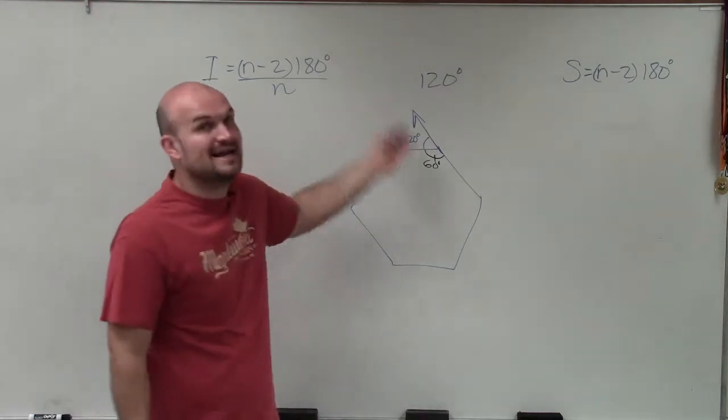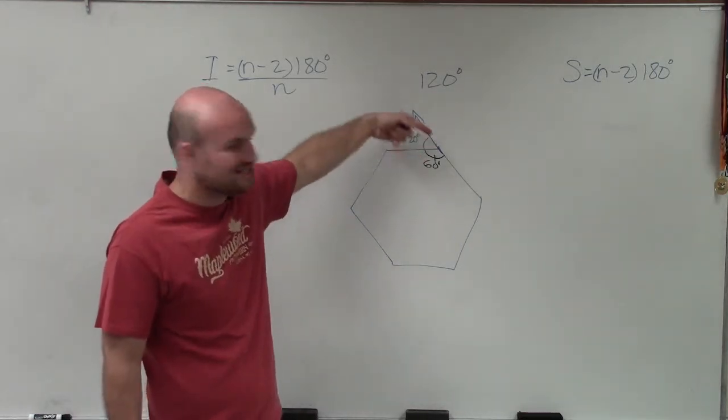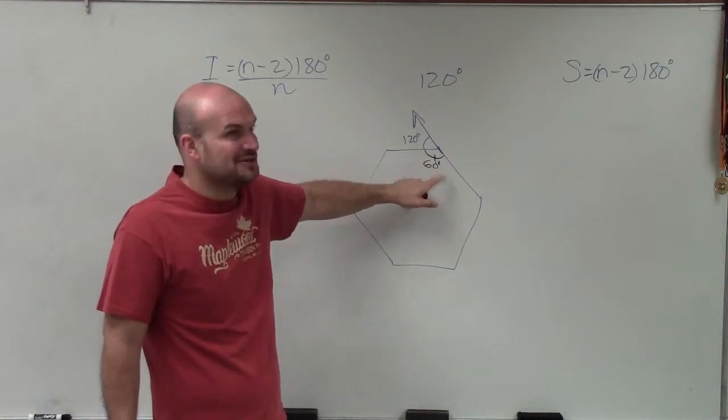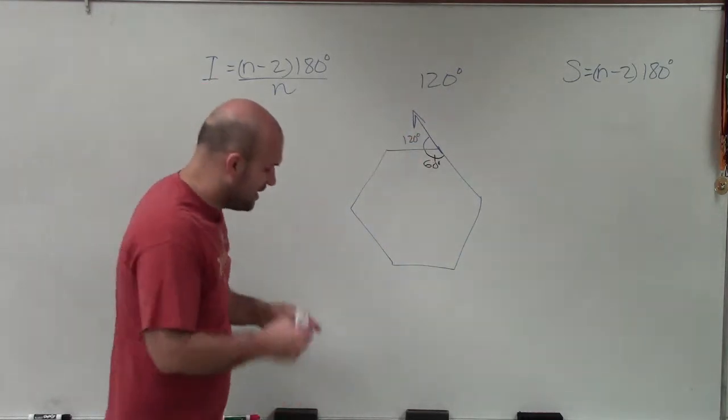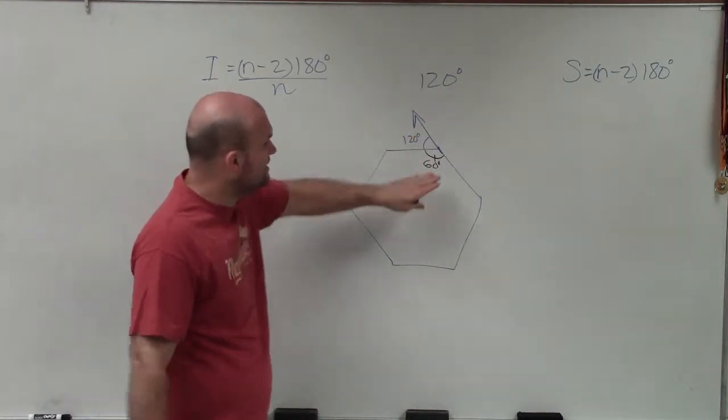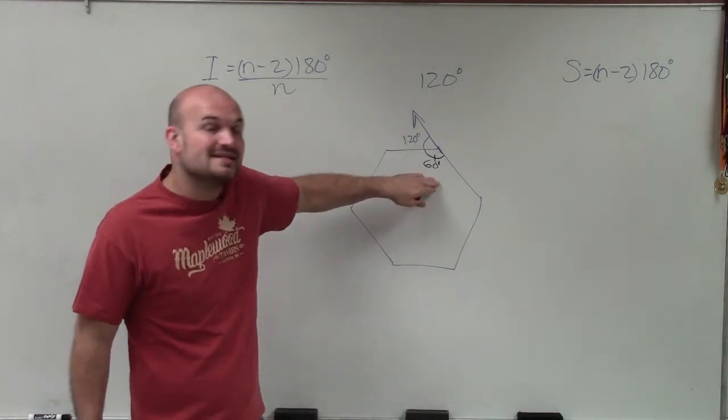Now obviously, a hexagon is not going to work because you can see 120 degrees is an acute angle and the 60 degrees is obtuse, which would not make sense. However, what that does tell me is the measure of my interior angle is now 60 degrees.